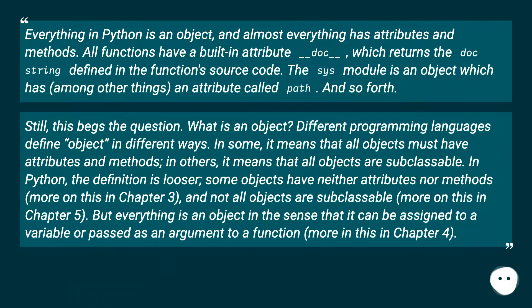Dive into Python: Everything is an object. Everything in Python is an object, and almost everything has attributes and methods. All functions have a built-in attribute __doc__ which returns the doc string defined in the function's source code. The sys module is an object which has, among other things, an attribute called path. And so forth.